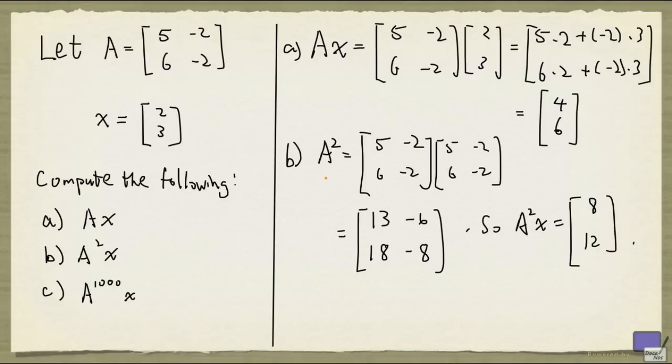Now it doesn't look like we can write down a formula for A to the 1000 right away. But if you look at 4, 6, that's simply 2 times x. And if you look at 8, 12, that's 4 times x.